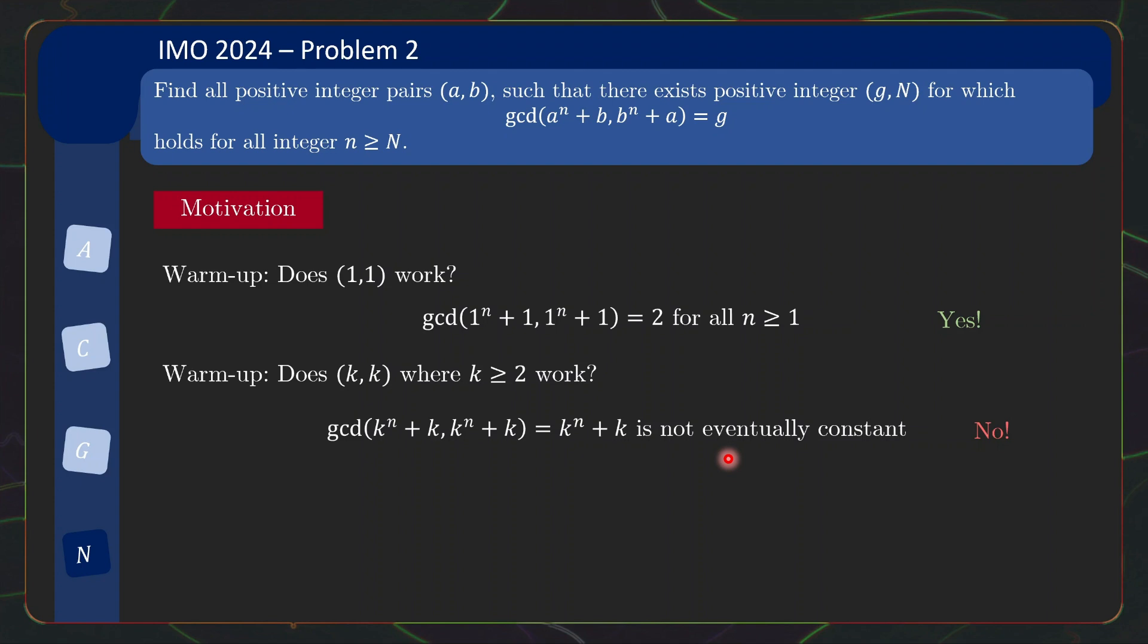The next natural thing to try is (1, b) where b ≥ 2. This is the gcd expression that we are after. Now, if n is odd, then b + 1 divides b^n + 1 so this gcd will just be b + 1.